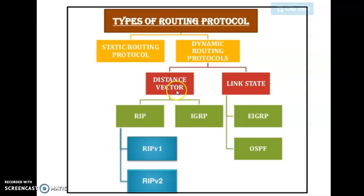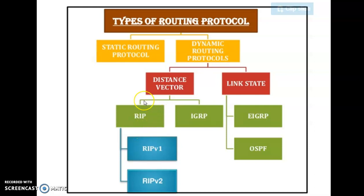A very well-known protocol under distance vector routing protocol is RIP. If you remember, we have already looked at RIP in Cisco Packet Tracer, where RIP stands for Routing Information Protocol. In RIP, there are different versions such as version 1, version 2, etc.